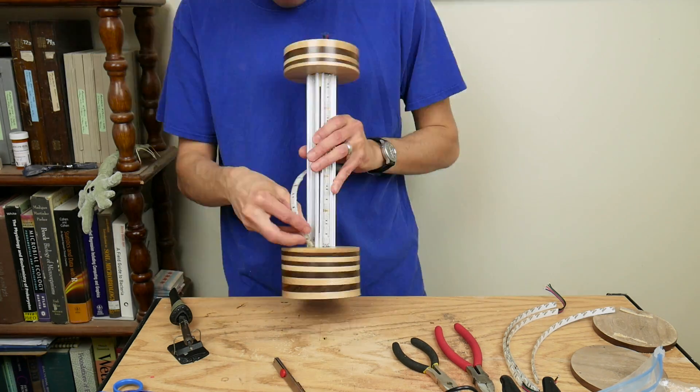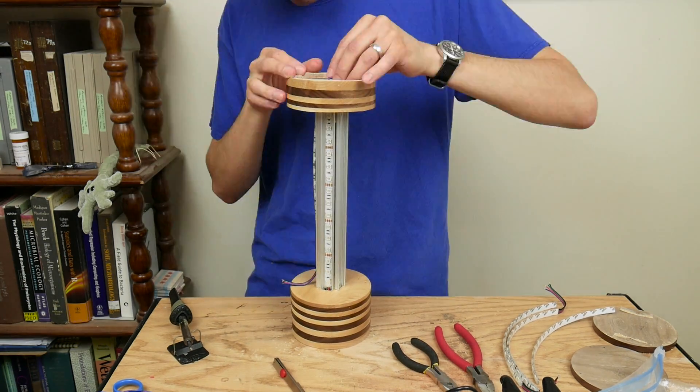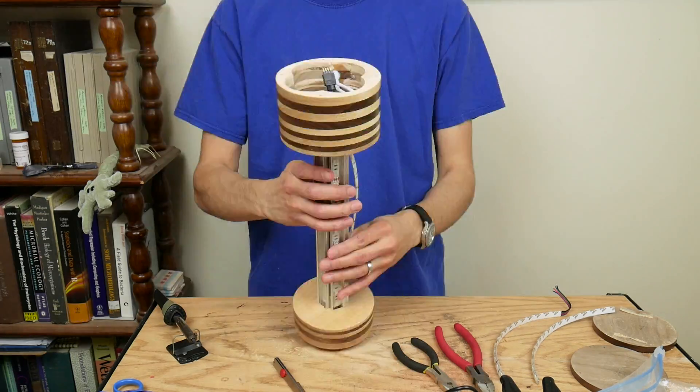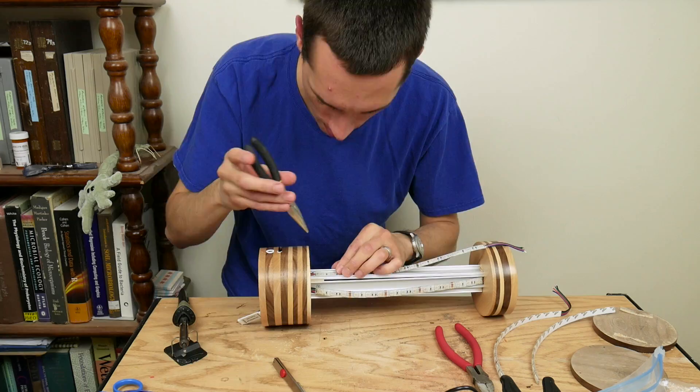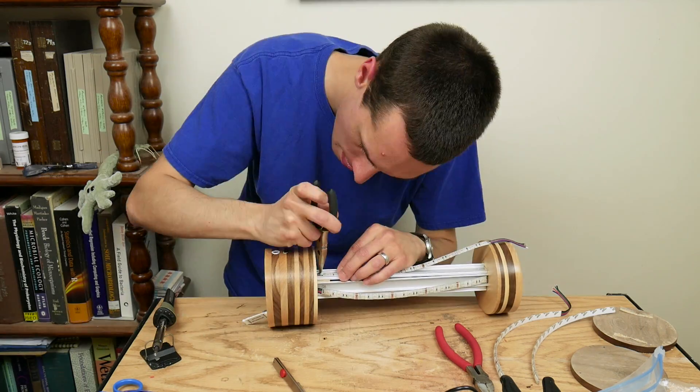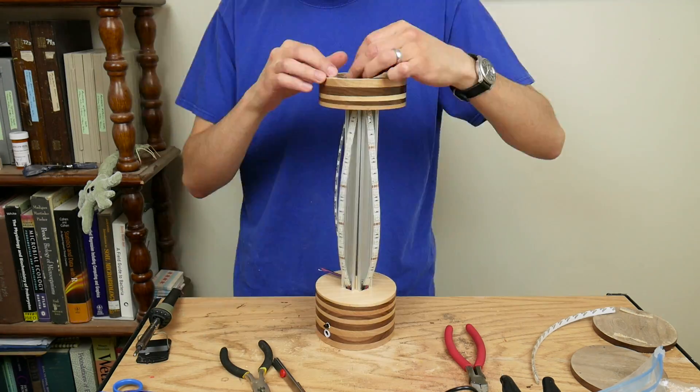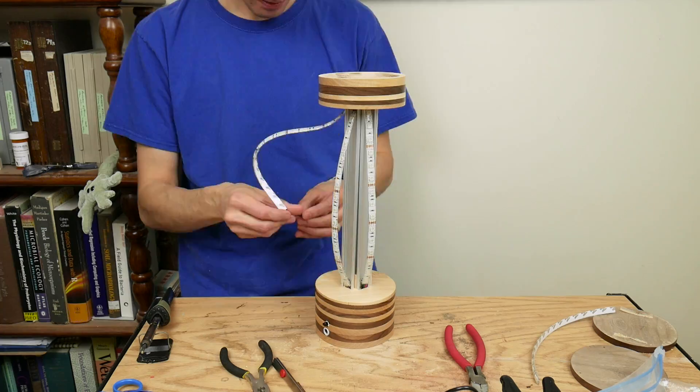I installed the other strips one at a time. Soldered the wires from one strip to the bare pads of the next strip. This was a little tricky but not having the strips stuck to the channel at this point really helped.